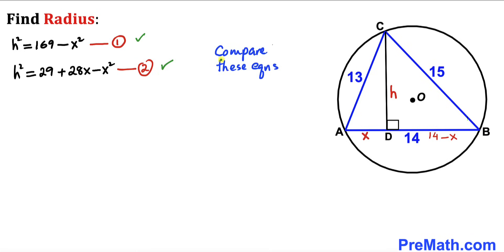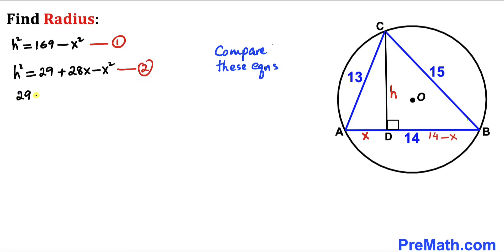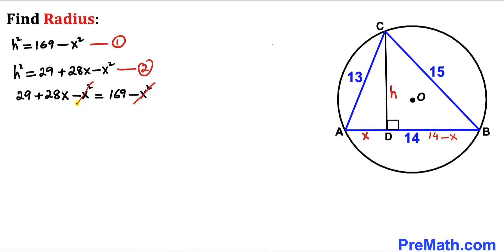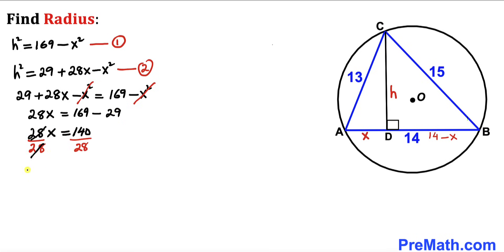Now let's compare Equation 1 and Equation 2. Since the left-hand sides are equal, we can equate the right-hand sides: 29 + 28x − x² = 169 − x². The x² terms cancel, so we have 28x = 169 − 29 = 140. Dividing both sides by 28 gives x = 5.